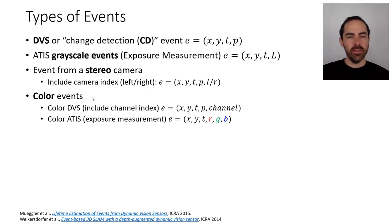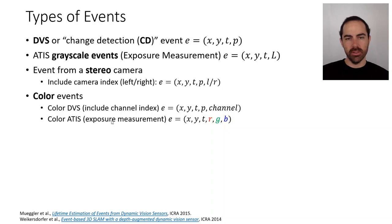There are also color events from the DVS, where we just include the channel where the change detection event was generated. And there are color events from the ATIS, which are grayscale events — now color events, or exposure measurement events — with pixel coordinates, timestamp, and three absolute intensities for red, green, and blue.